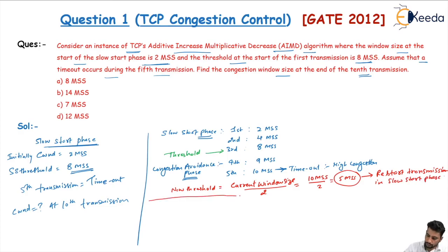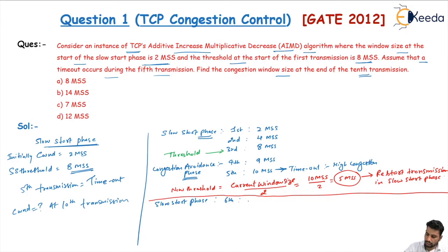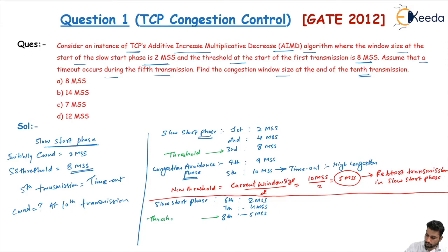Again the slow start phase starts. The sixth transmission is again 2 MSS. The seventh transmission is 4 MSS — exponential increment. The eighth transmission is 5 MSS because 5 MSS is the new slow start threshold, so the threshold is reached here.